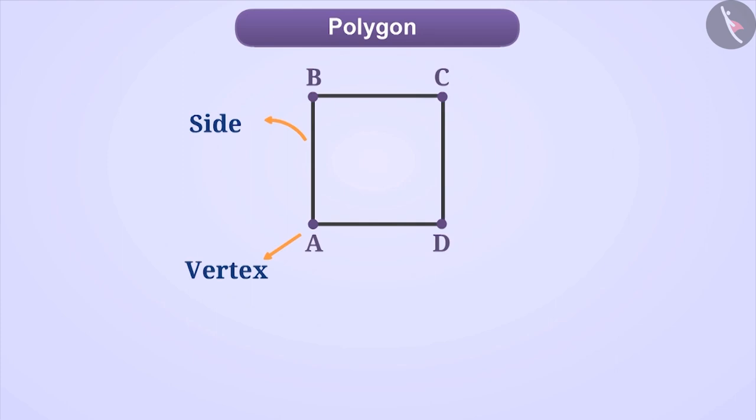In this way, we can say that this polygon has four sides which are side AB, side BC, side CD and side DA.